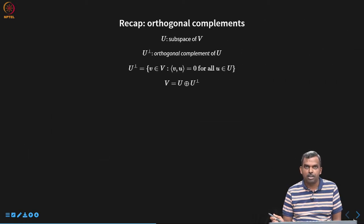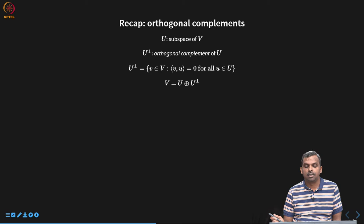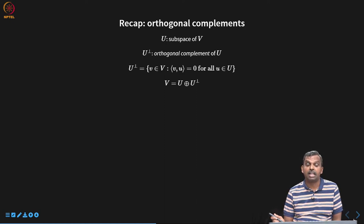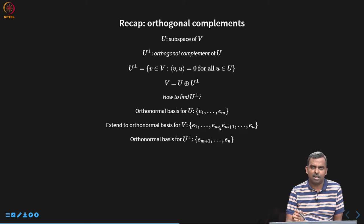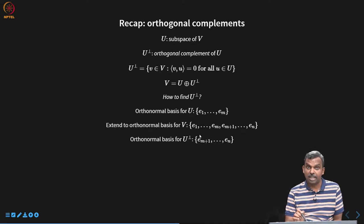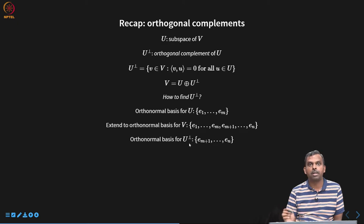Quick recap of orthogonal complements. Supposing you have a subspace of a vector space, we define the orthogonal complement as the collection of all vectors that are orthogonal to every vector in U. That is how we define the orthogonal complement, denoted U⊥. We saw the wonderful property that U and U⊥ have a direct sum equal to the entire vector space V. To find U⊥, you start with an orthonormal basis for U, extend it into an orthonormal basis for V, and then U⊥ is simply the extended vectors.